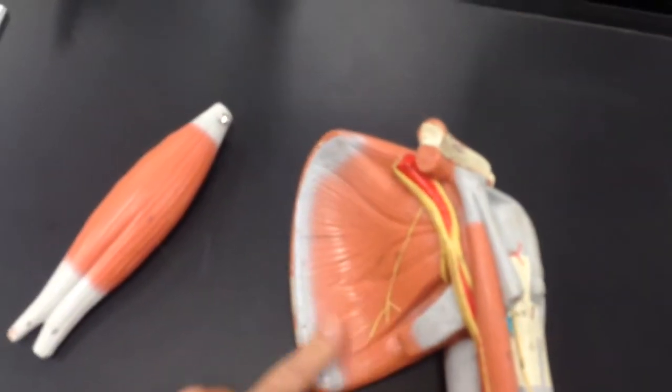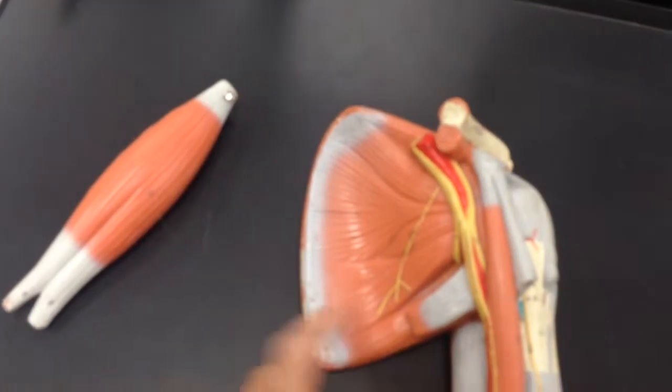Inside the scapula, we have the subscapularis. I have removed the deltoid, the deltoid muscle, and underneath the deltoid,